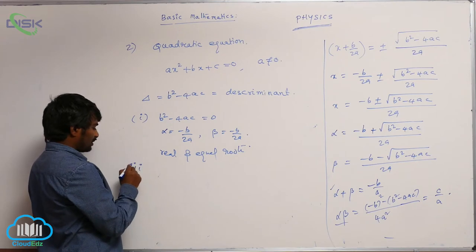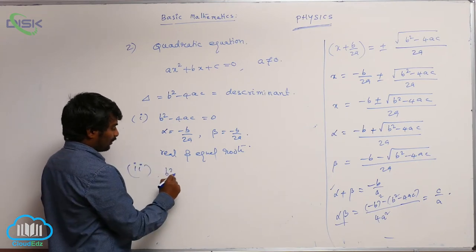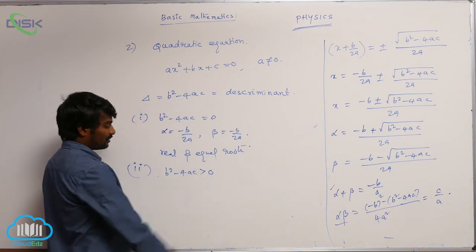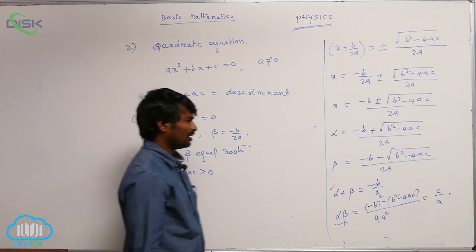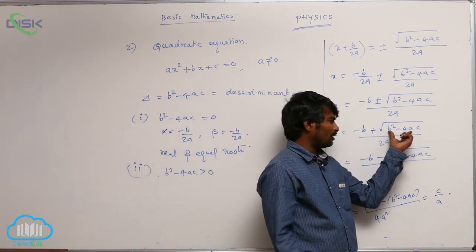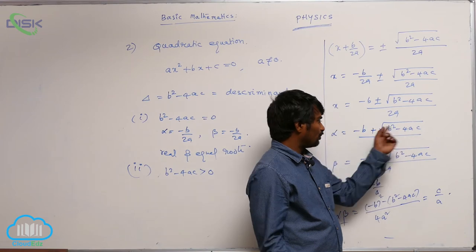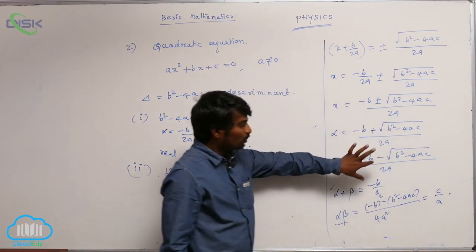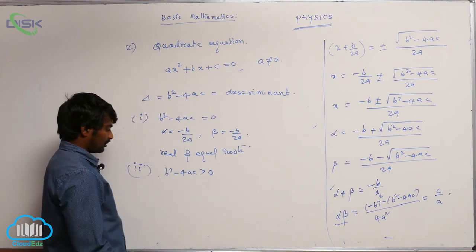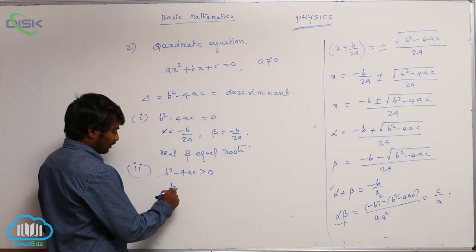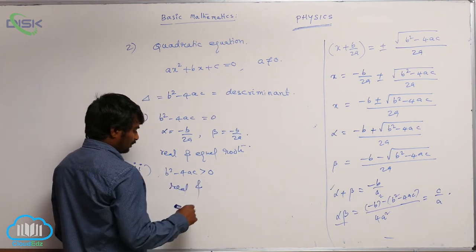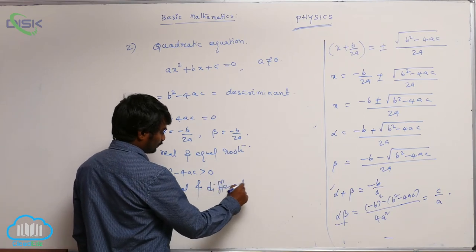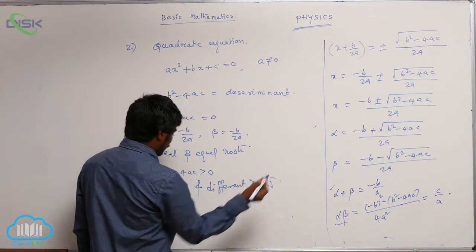Second condition: if B squared minus 4AC is greater than 0, that means it is a positive value. You will have a positive value under the square root, giving two different values — one with plus and one with minus. So you will be having two real and different roots.